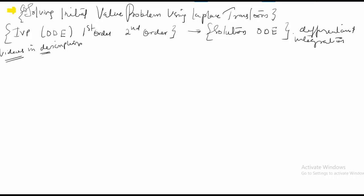The problem will usually be given in the time domain. For example, the problem to be solved is: y double-dash plus 3y dash plus 2y equals e raised to minus 3t.